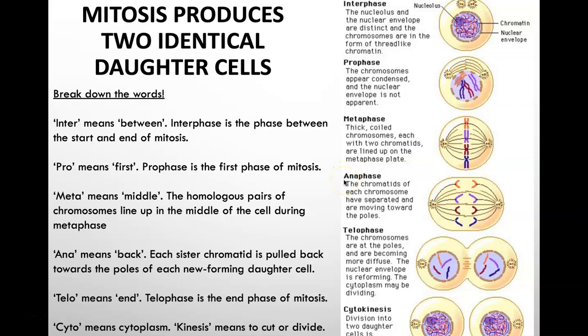Anaphase is the next phase. Ana is, I believe it's a Greek word meaning back. So each sister chromatid is pulled back towards the pole of each new forming daughter cell. And you can see those chromatids being pulled back by their centromere. They're actually literally split down the middle by their centromere. And each sister chromatid goes to each pole of the cell. And then in telophase, the cell starts to divide and the nucleus starts to reform. So telophase is the end phase of mitosis. And then we have one last phase here, which is not technically in the process of mitosis, but it's the last stage that happens after mitosis called cytokinesis. Cytos, we know that's cytoplasm. Kinesis means to cut or divide. So cytokinesis means to divide the cytoplasm. And you can see here that the new cell membranes are forming around those two new daughter cells. So we go from one parent cell to two daughter cells.